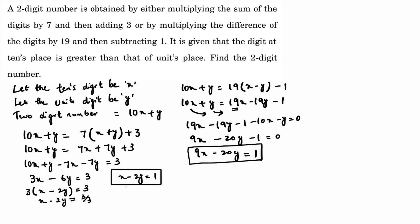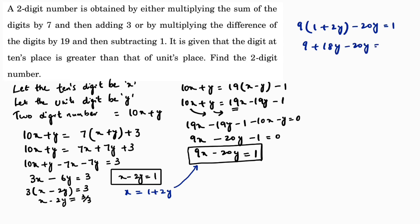Now I will solve these two equations by substitution. From the first equation, x equals 1 plus 2y. Substituting into the second equation: 9 times (1 plus 2y) minus 20y equals 1. So 9 plus 18y minus 20y equals 1, giving 9 minus 2y equals 1. Transposing: 2y equals 8, so y equals 4.